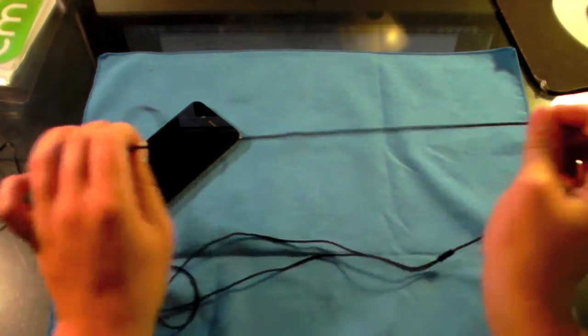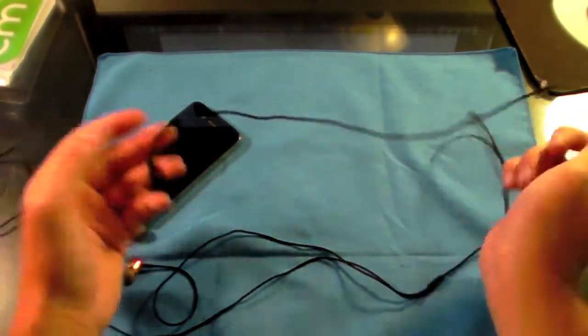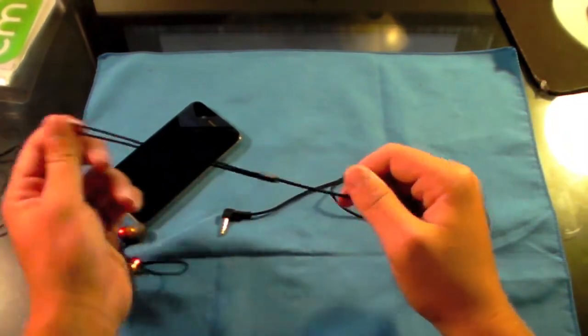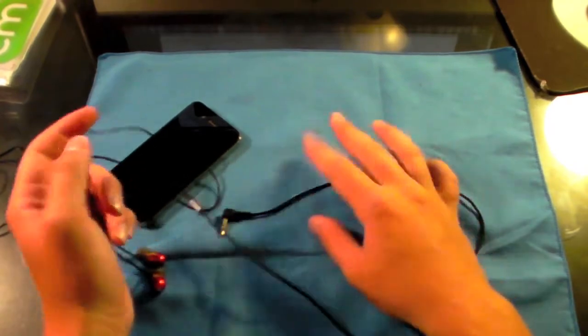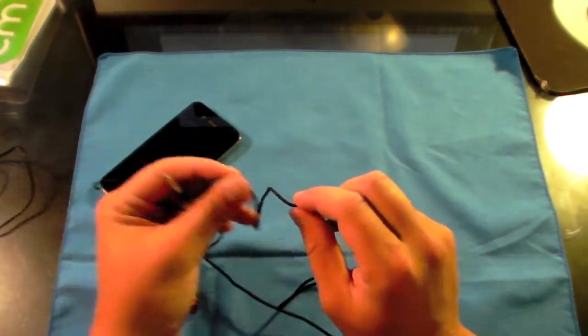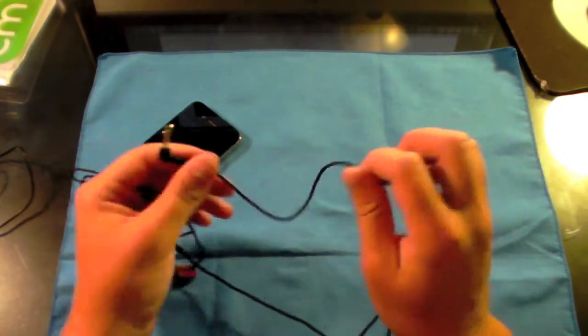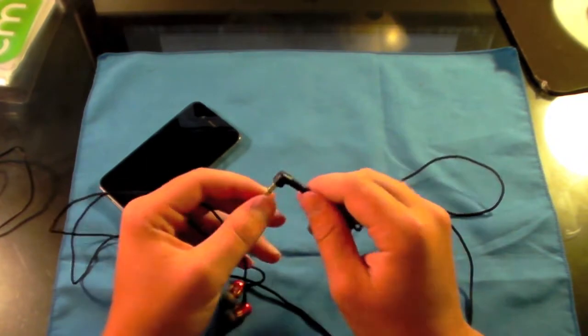That braided design also really helps with tangle-free. I think they advertise it to be completely tangle-free - definitely not the case. I've been able to knot it up and tangle it just by crumpling it up and putting it in my pocket. But because it does have that braided design and it just kind of slides off each other, it's really easy to untangle. That's the main killer for me.